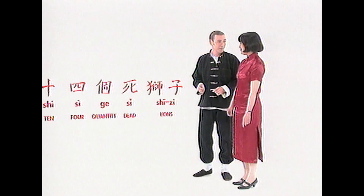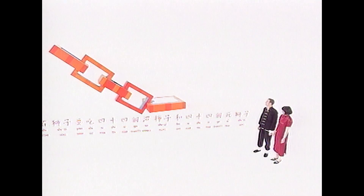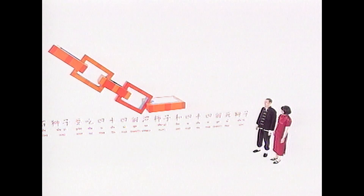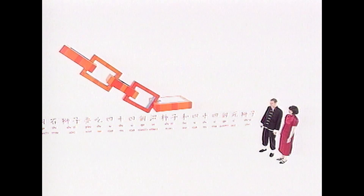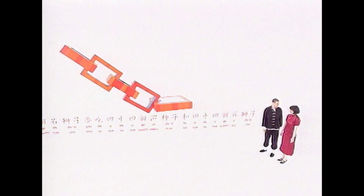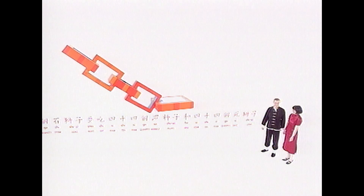How did I do? Not that good. That bad. So if you want to say 44 stone lions want to eat 44 wrinkly plums and 44 dead lions in Mandarin, that's how. Thank you. You're welcome.